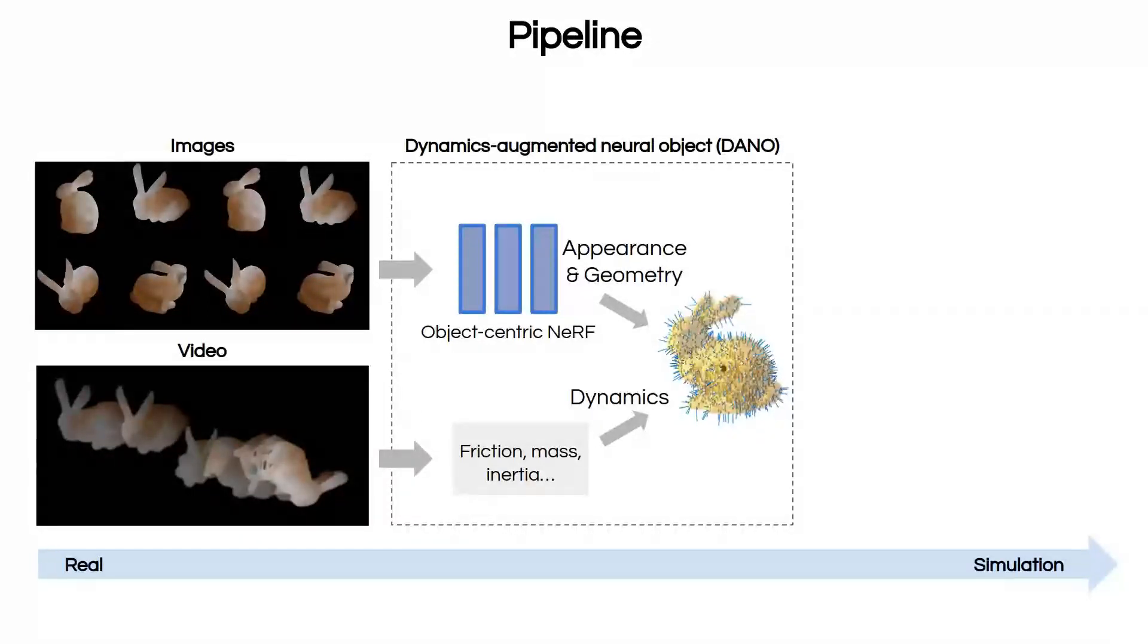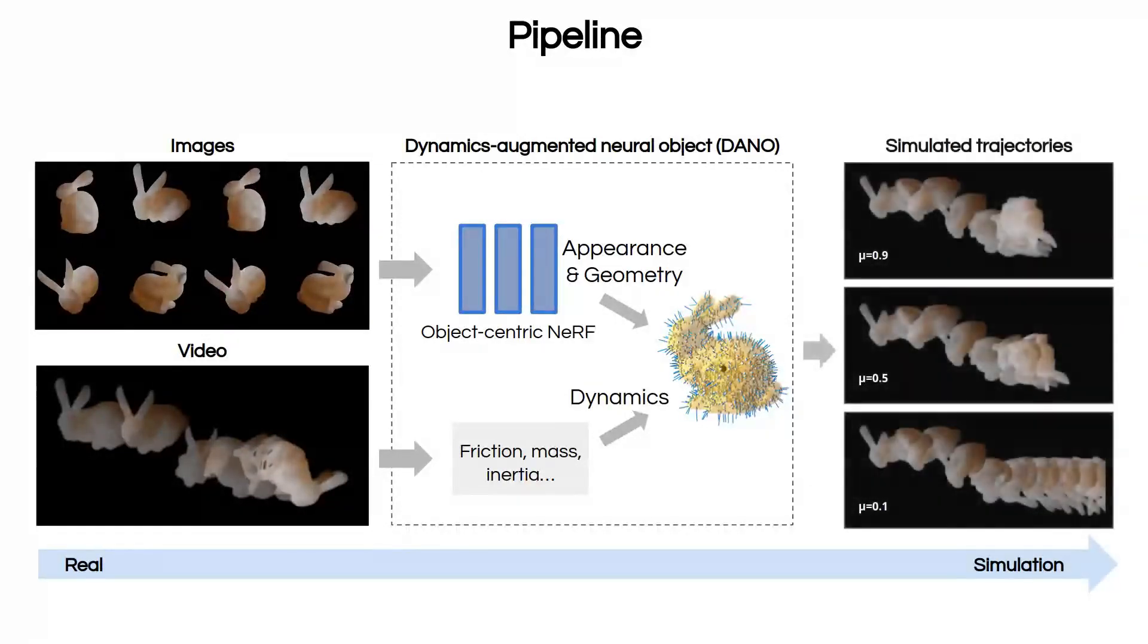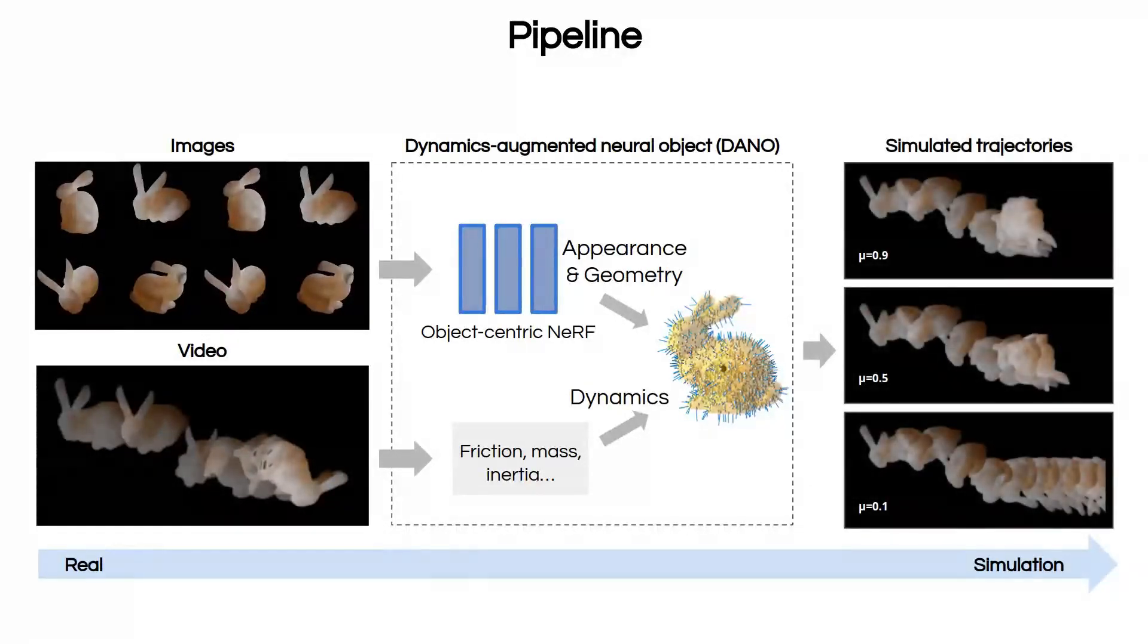The Dynamics Augmented Neural Object is simulated in a Differentiable Physics Simulator, interacting with planes, robots, and other rigid objects. The resulting simulation can be used for real-to-simulation transfer or to synthesize robot behaviors, as we will see later.